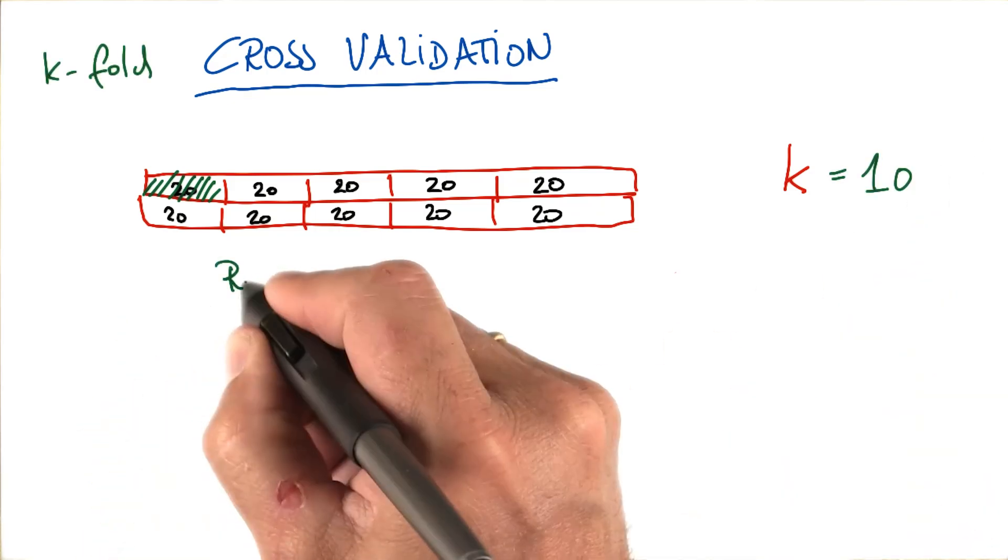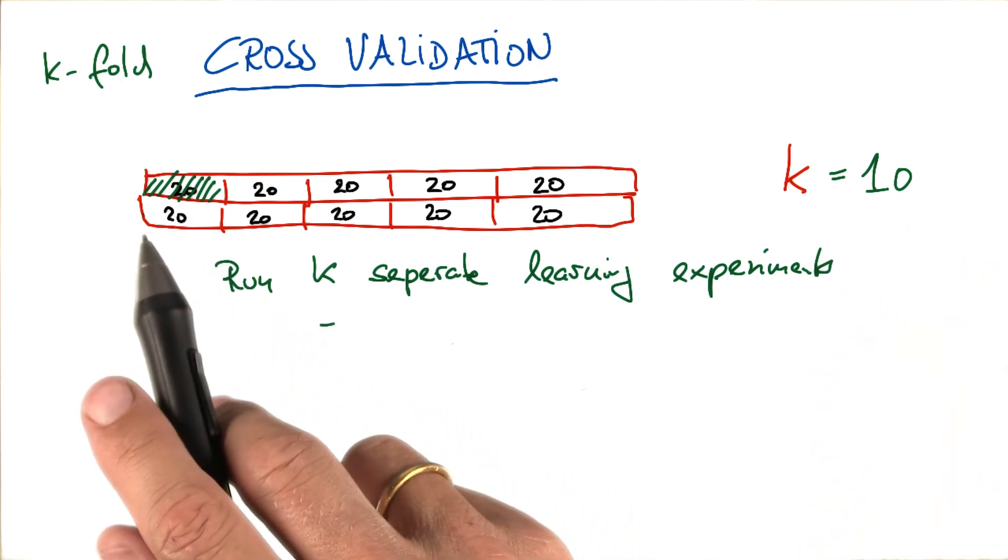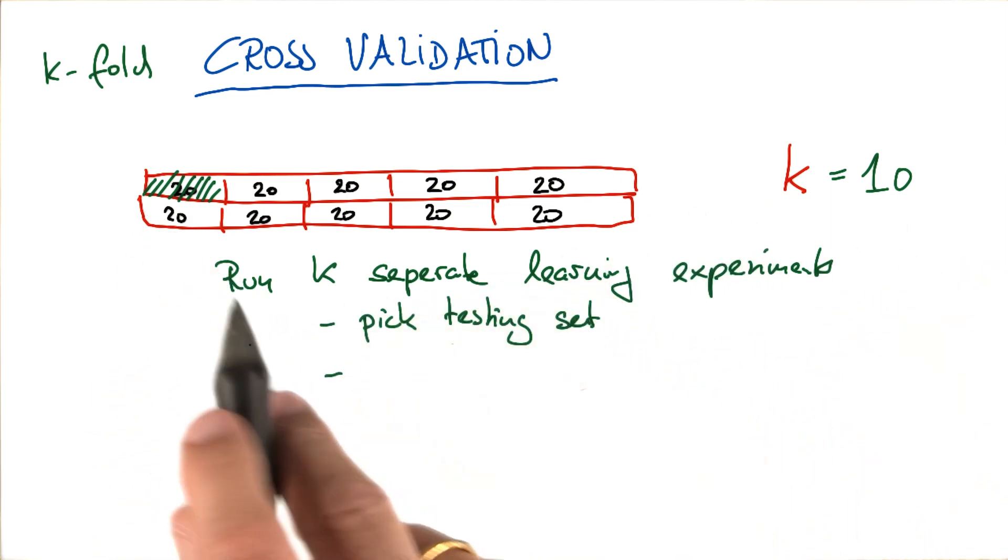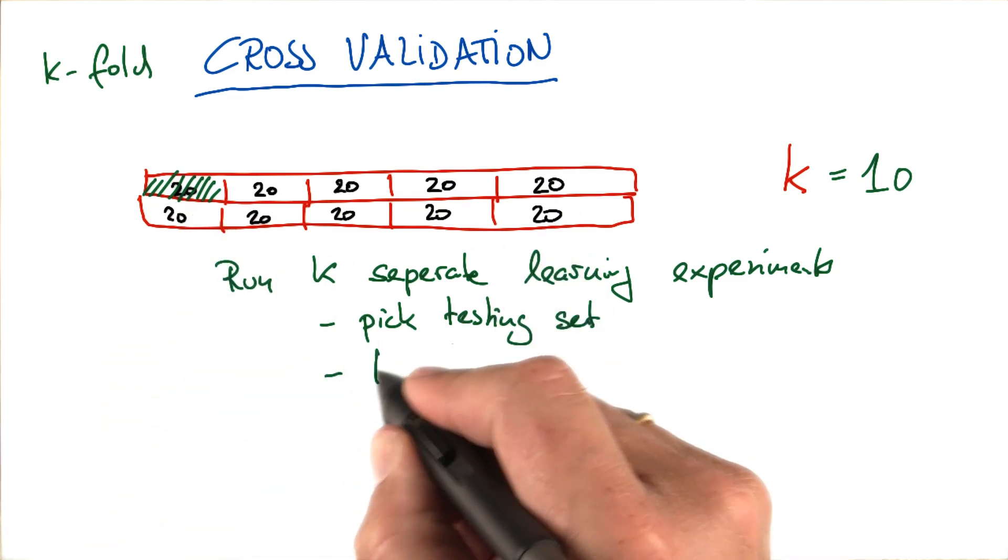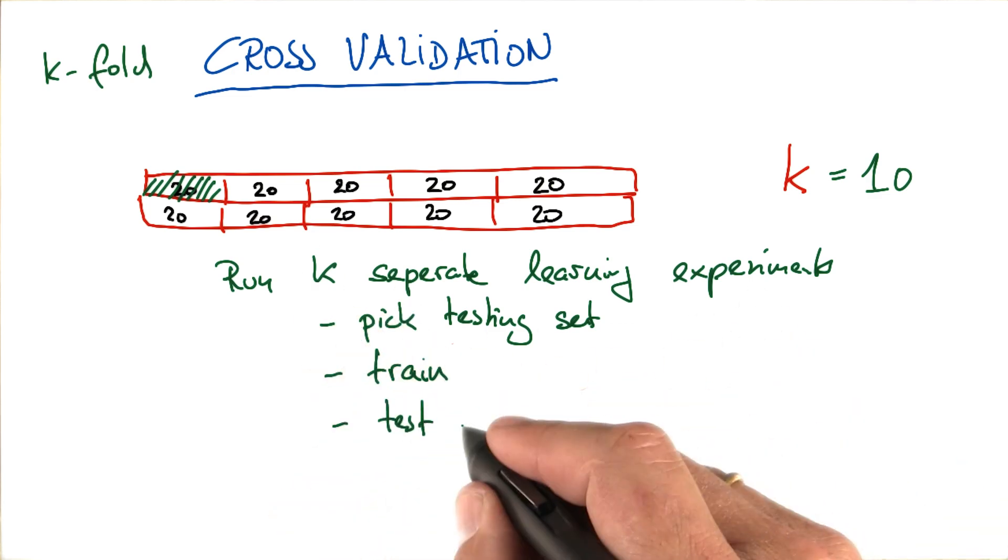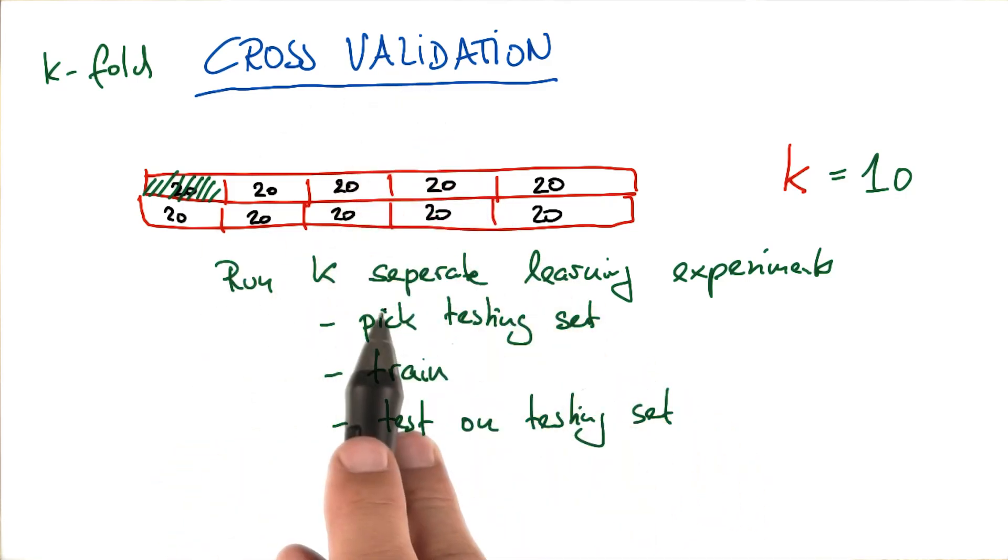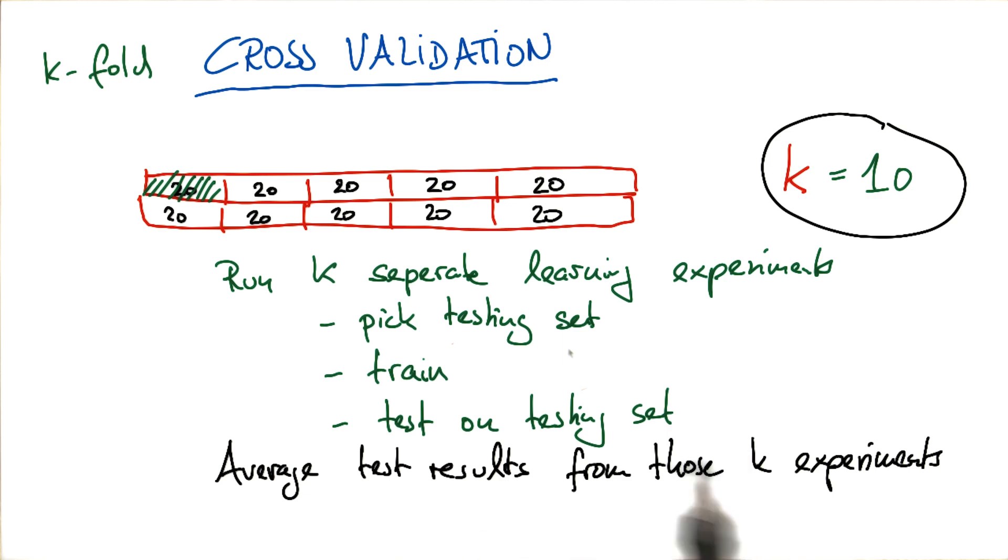In k-fold cross-validation, you run k separate learning experiments. In each of those, you pick one of those k subsets as your testing set. The remaining k-1 bins are put together into the training set. Then you train your machine learning algorithm, and just like before, you test the performance on the testing set. The key thing in cross-validation is you run this multiple times. In this case, 10 times. And then you average the 10 different testing set performances for the 10 different holdout sets. So you average the test results from those k experiments.